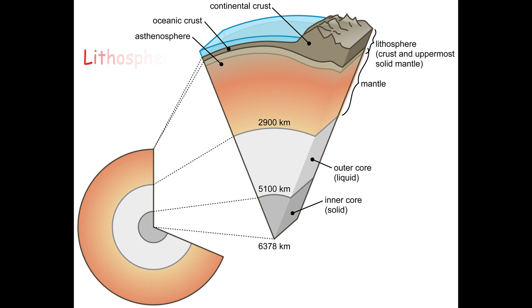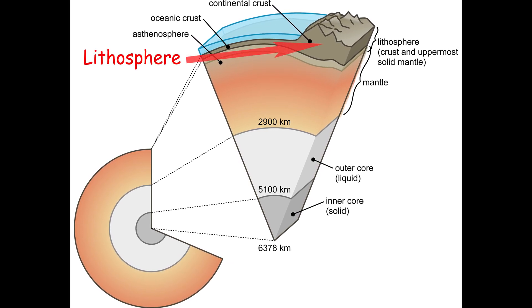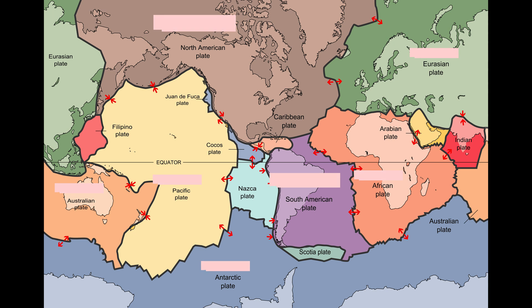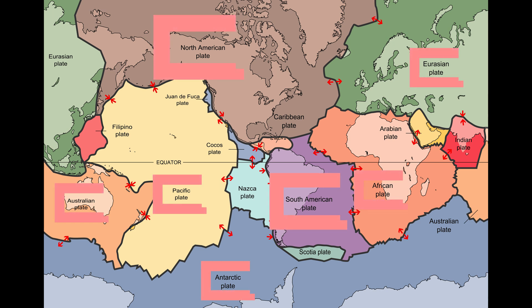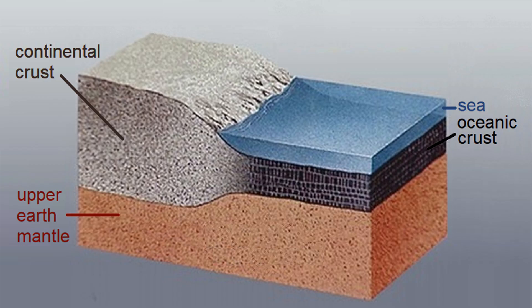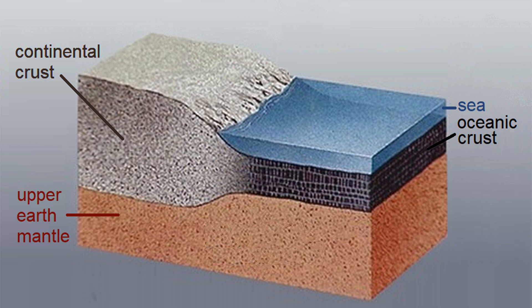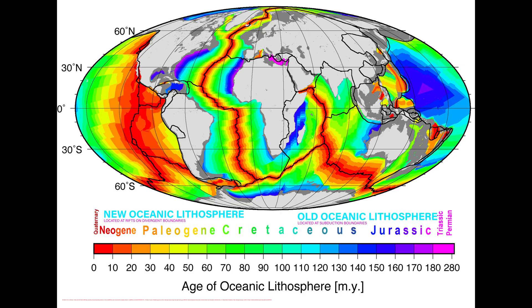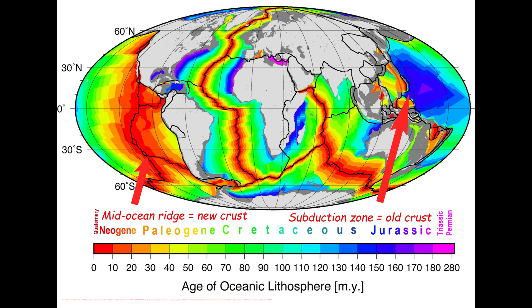The lithosphere is the planet's hard outermost shell and contains tectonic plates. Earth's lithosphere contains seven or eight main plates, depending on how they are classified, plus many smaller plates. Tectonic plates comprise oceanic lithosphere and thicker continental lithosphere, each topped by its own type of crust. The thickness of the oceanic lithosphere typically ranges from around 6 km at mid-ocean ridges to over 100 km near subduction zones. Continental lithosphere is around 200 km thick; however, this varies between basins, mountain ranges, and continents' stable cratonic interiors.